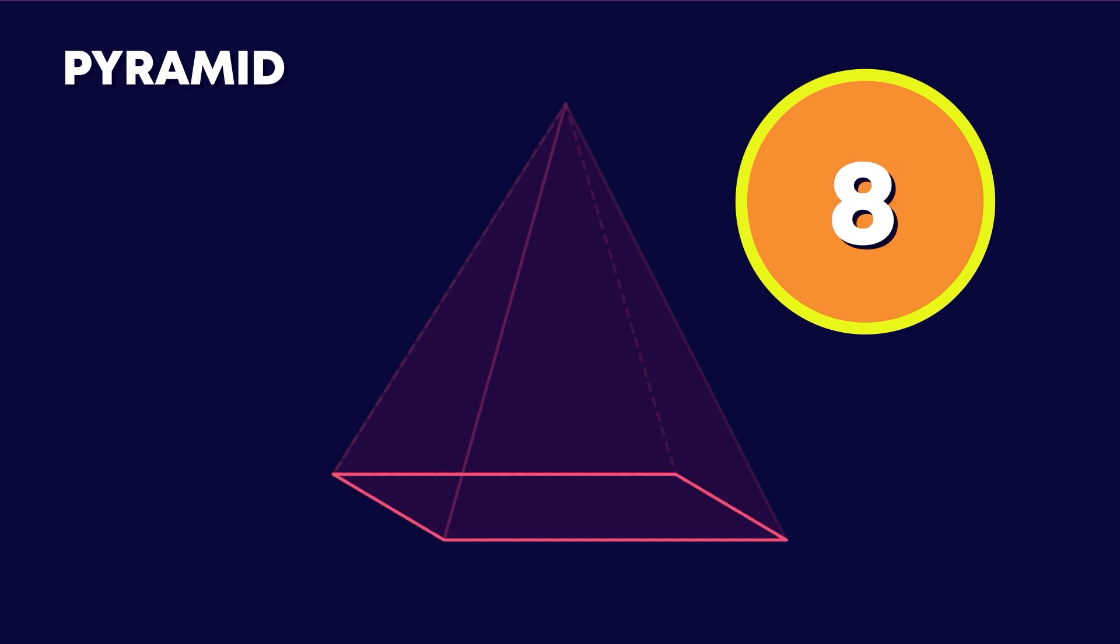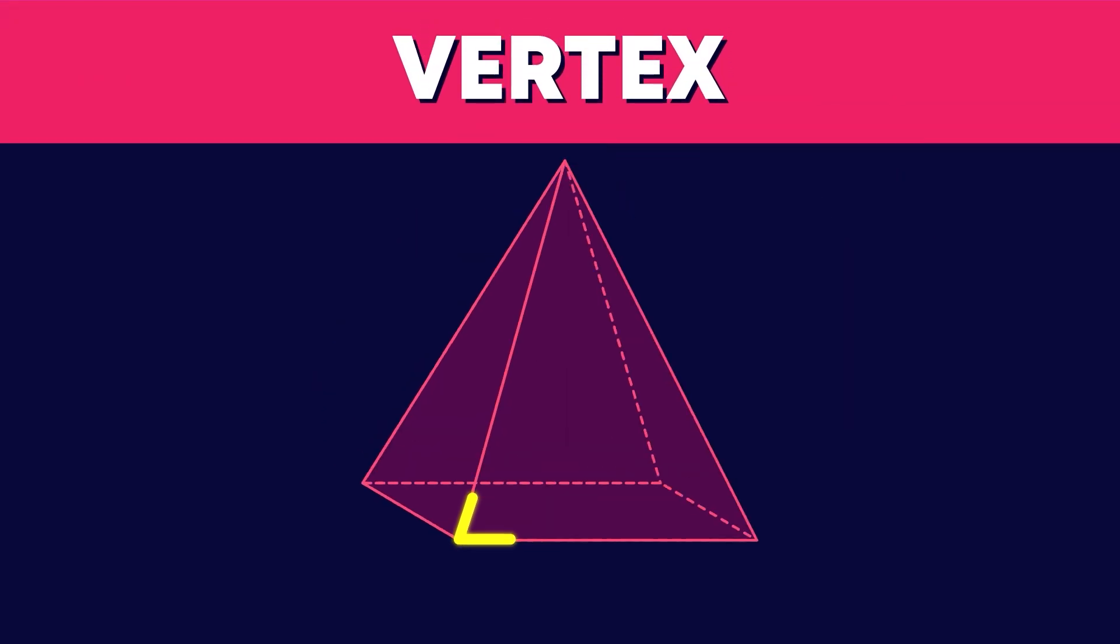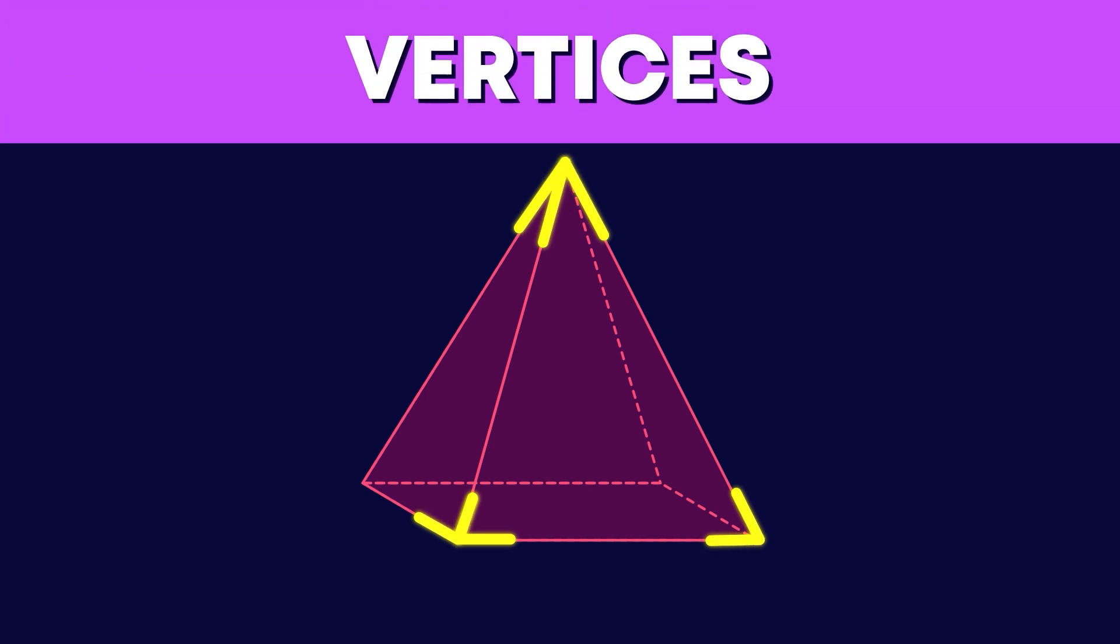Where 2 edges meet to make a corner is called a vertex. More than 1 corner is called vertices.